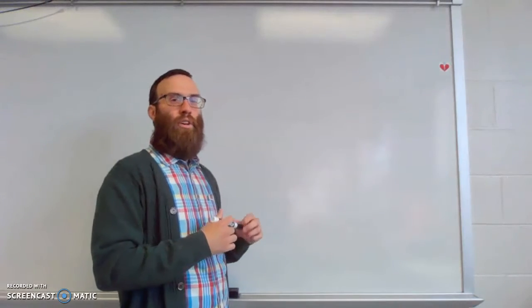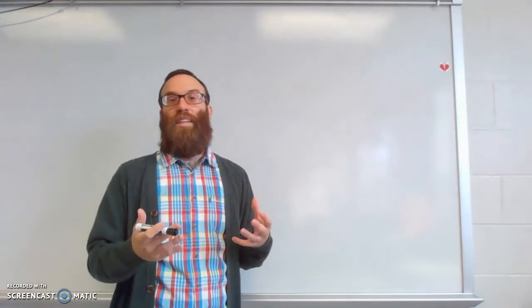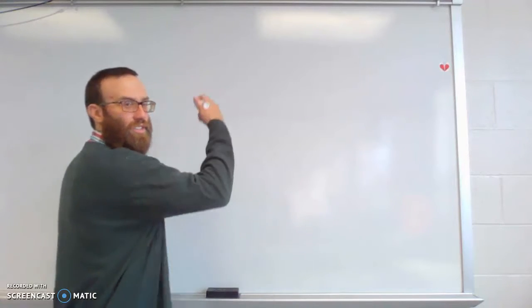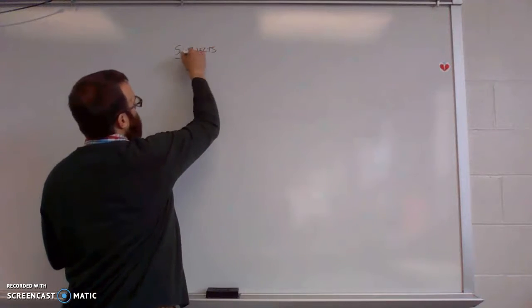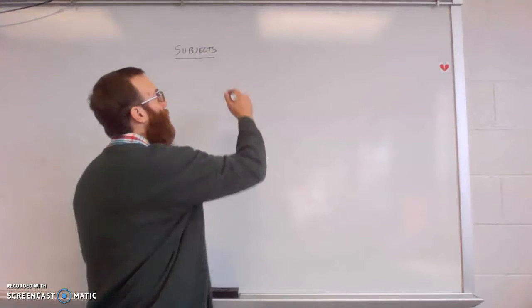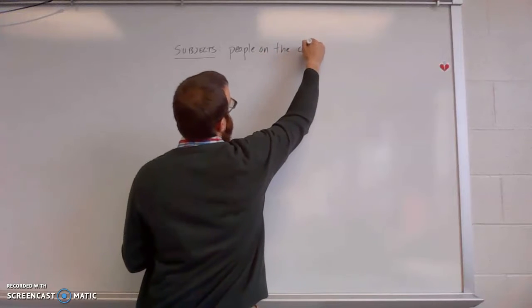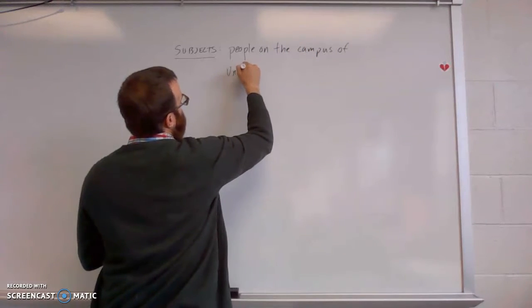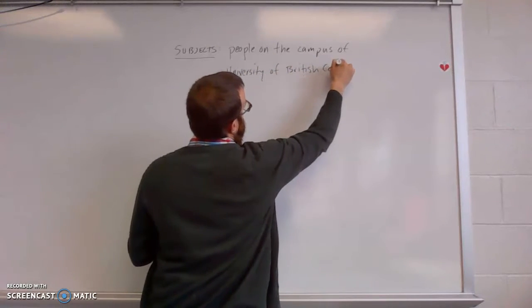So the first thing that they had to do was find subjects. We call them subjects. If they're not humans, we call them experimental units, a little bit more inanimate. With people, we like to go with that subjects word. So we're going to start with subjects here. And he didn't tell us in the video how many people they talked to, but we know that it was people on campus of University of British Columbia.